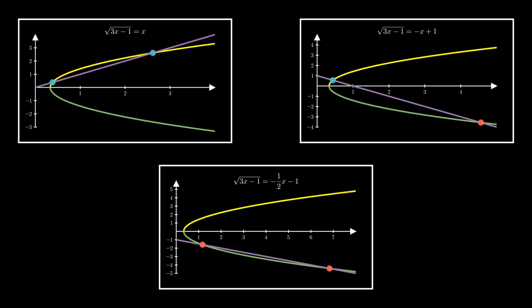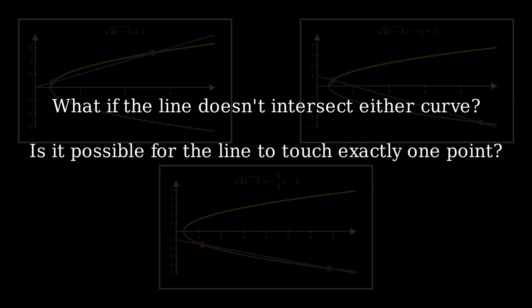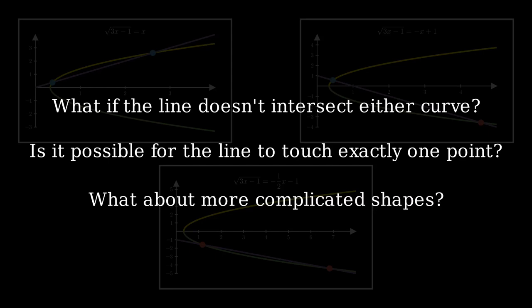Now, there are still questions to ask here. What if the line doesn't intersect either curve? Is there a way for it to touch one of the curves exactly once, creating only one solution instead of two? What about more complicated shapes for the graphs? There's a whole lot more out there than just linear equations and square roots.